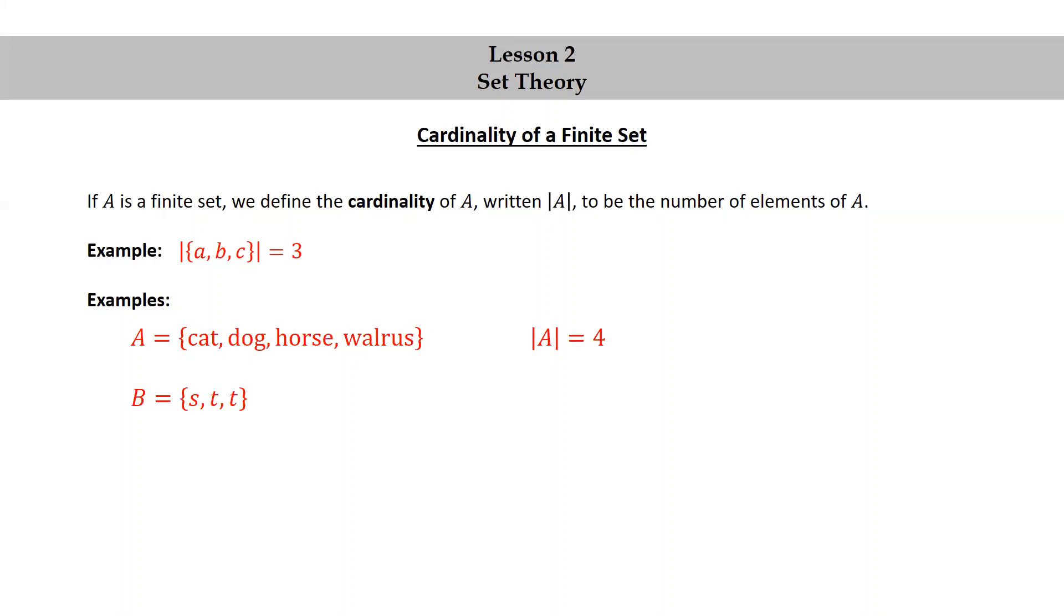Let B be the set consisting of {s, t, t}. Then the cardinality of B is two. Remember that the set consisting of {s, t, t} is the same as the set consisting of just {s, t}. The most natural way to write a set is not to repeat any of the elements.